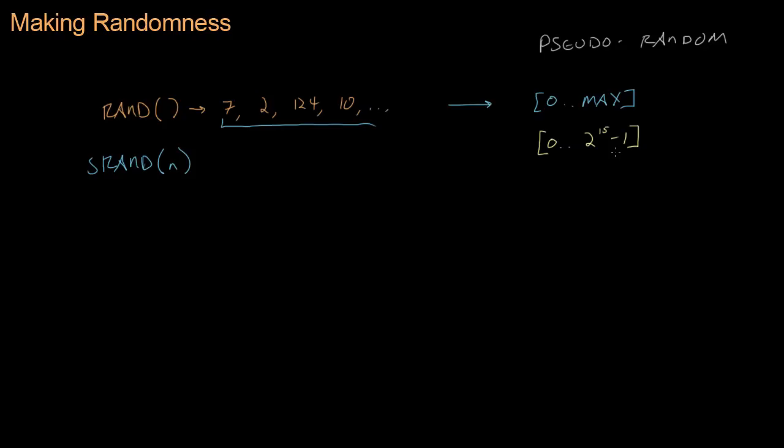But it's guaranteed to always be between zero and at least 2 to the 15 minus 1. That is the largest number that you can fit in a signed short. But that's not very useful for us. We want a number like 1 to 100 so that we can say, what's the starting player's health? Or what's the number of apples in the player's starting inventory? Or something like that.